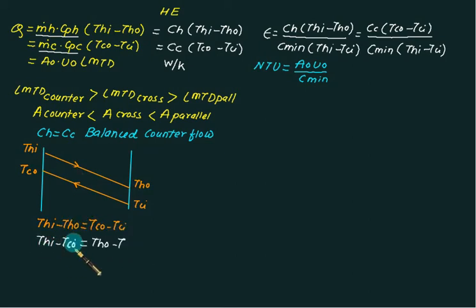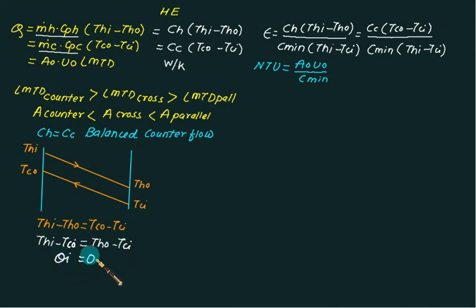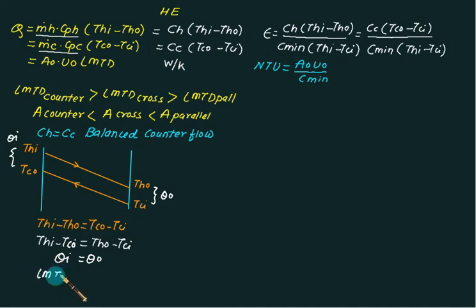T_CO minus T_CI. This is the value of A_I. T_HI minus T_HO equals T_CO. If we have the case of LMTD, then we replace LMTD, since the temperature differences are the same.